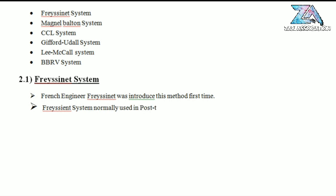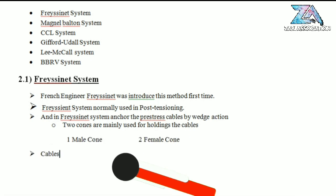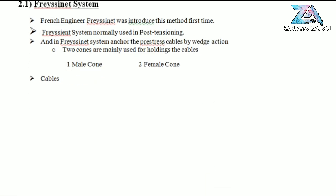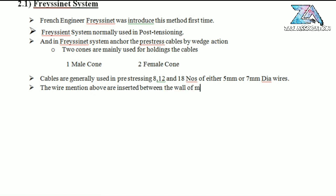First, we explain the Freyssinet system. This system was introduced by French engineer Freyssinet and is normally used in post-tensioning. In this system, the prestress cables are anchored by wedge action. Two cones are mainly used for holding the cables: the first is the male cone and the second is the female cone. Wires used are 8, 12, or 18 in number. The 18-wire cable has a 5 mm diameter and the 12-wire cable has a 7 mm diameter.